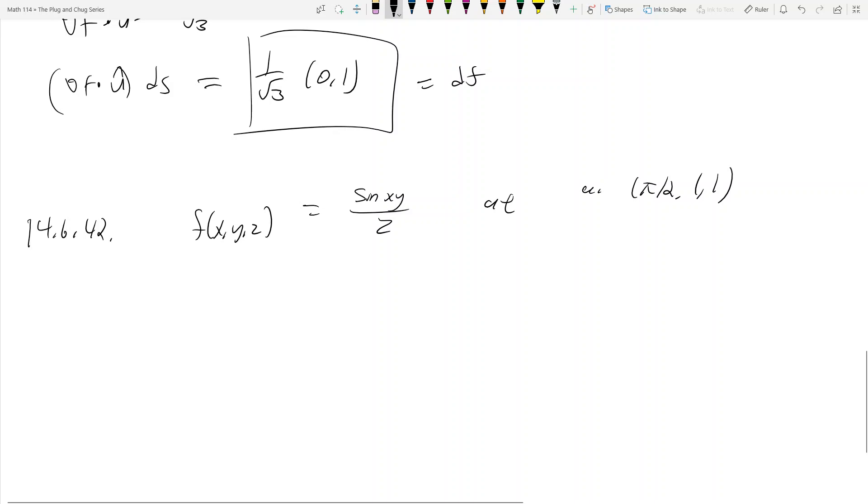What we want to do is we want to evaluate the gradient. So the gradient of f, what is this? Well, it's the partial of f of x, so that's y cosine xy over z, and then this is x cosine xy over z, and then the partial with respect to z is a little harder to figure out, but you have to use the quotient rule, and you'll get negative sine xy over z squared. So now we've got to evaluate this at the point pi over 2, 1, 1.